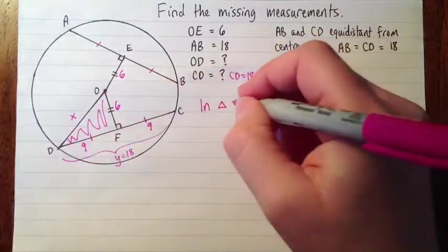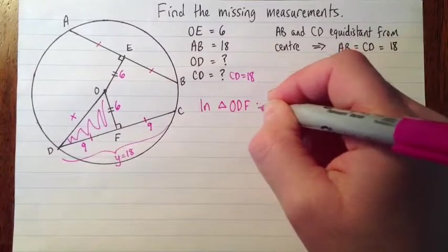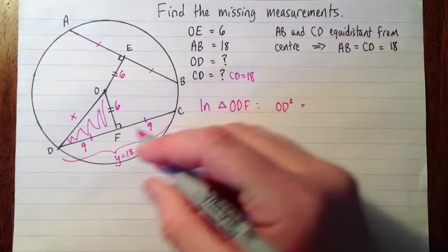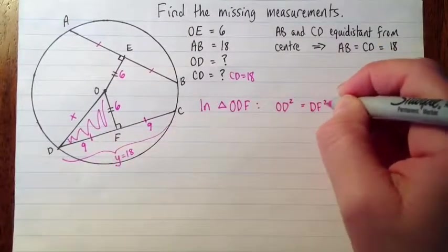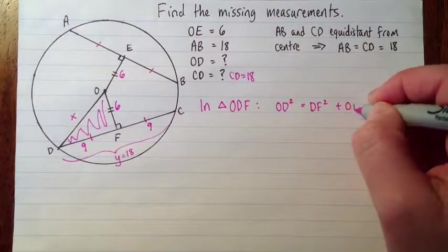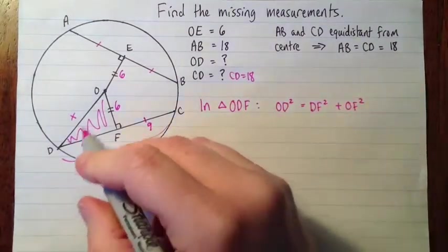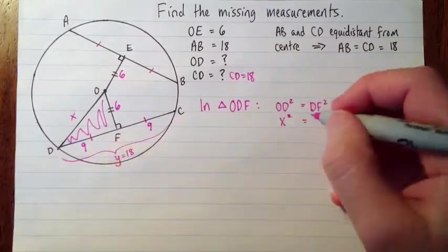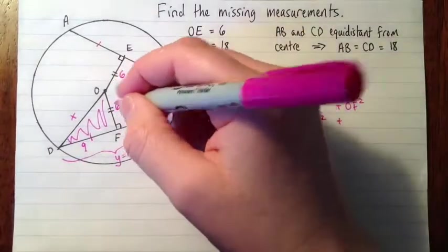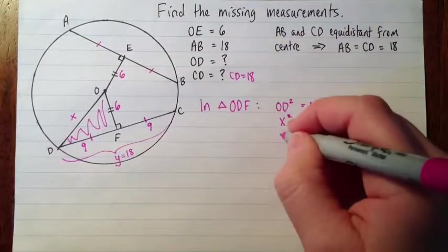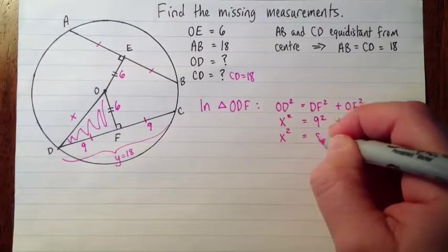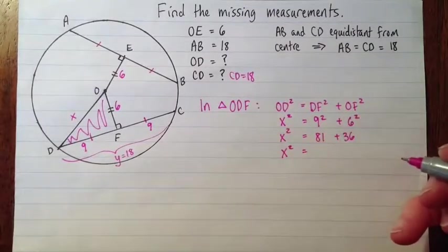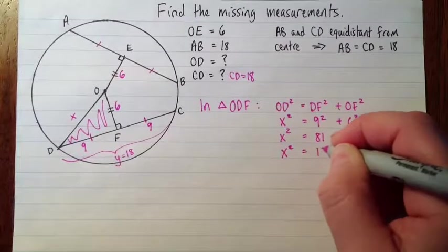In triangle ODF, we've got OD squared equals DF squared plus OF squared. Now I'll substitute what we know. OD, we don't know how long that is—that's what we're looking for—so that's X. DF squared is 9 squared, and OF squared is 6 squared. So we have X squared equals 81 plus 36. X squared equals 117.